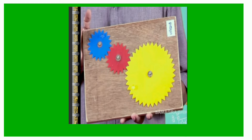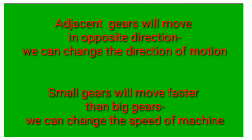The speed of gears depends on the size. The small gears will move faster and the big gears will move at a slower rate.